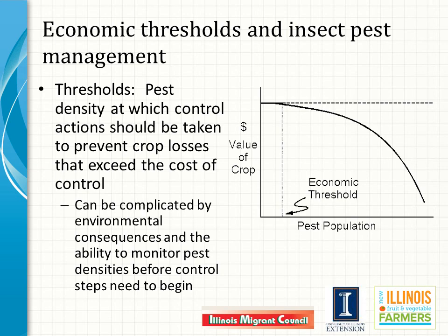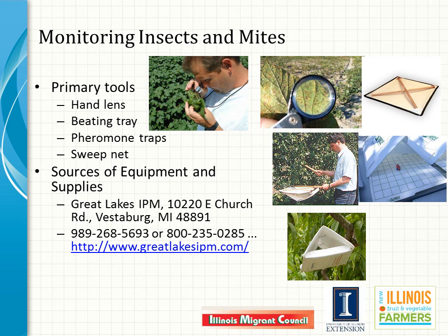If estimates of pest density allow decisions on whether or not controls are warranted, what kinds of monitoring or scouting tools are needed? The most common tools and devices are a hand lens — not a big magnifying glass, because the distortion associated with lenses of that diameter limits their effective magnification, so buy a small lens and learn how to use it. A beating tray or ground cloth — any light-colored surface that can be held or placed under plants so that when plants are struck or shaken, insects drop onto the tray or cloth. Pheromone traps baited with lures that attract certain pest species. And a sweep net may be used in low-growing crops. A reliable supplier of monitoring tools in the Midwest is Great Lakes IPM.